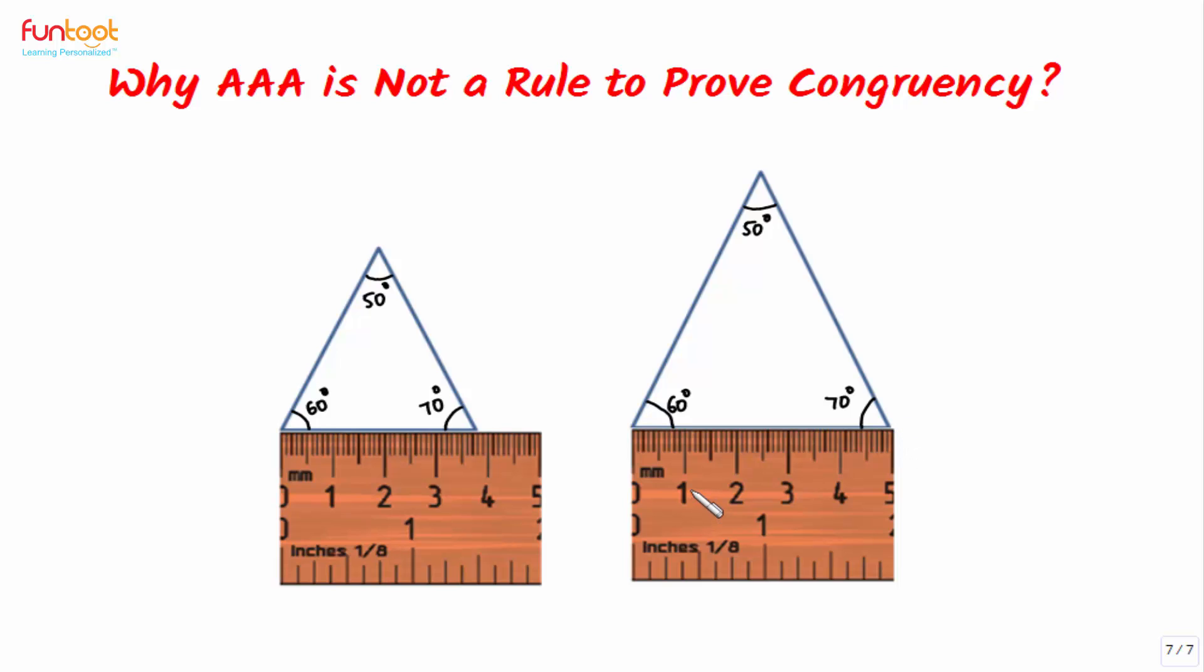Surely the triangles cannot be congruent as we can see their sizes are different and they will not overlap each other exactly. And what shall we do here so that the two triangles become congruent?